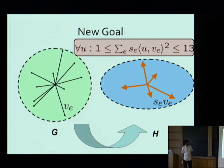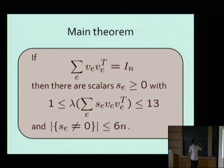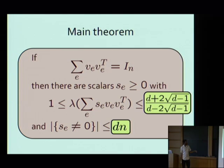To recap: I've reduced the goal of sparsifying graphs to finding sparse approximations of the identity. In particular, I've reduced what I want to do to proving the following theorem: given any decomposition of the identity, there's a sparse set of scalars — at most 6n — so that the result is a 13-approximation to the identity. In the paper we actually proved this with the Ramanujan bounds, but in this talk I'll just show the 6n and 13 for simplicity.